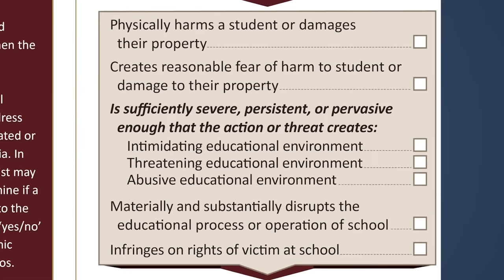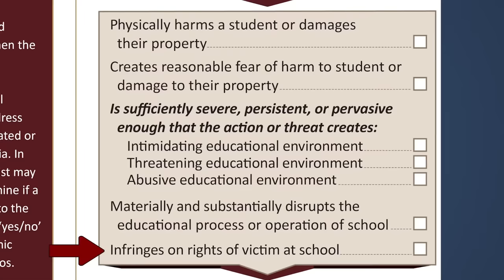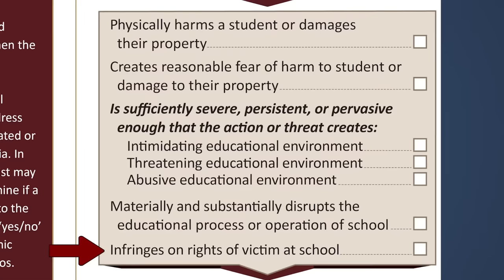For this next section, the resulting action must answer at least one of the next questions in order to potentially be considered bullying. Has the victim or their property been physically harmed, or does the victim have a reasonable fear of harm to themselves or their property? Is the action or threat sufficiently severe, persistent, or pervasive enough that it creates an intimidating, threatening, or abusive educational environment? Did the action materially or substantially disrupt the educational process or operation of the school? Did the alleged bully infringe on the rights of the victim at school? If any of these questions are true, continue down the checklist.